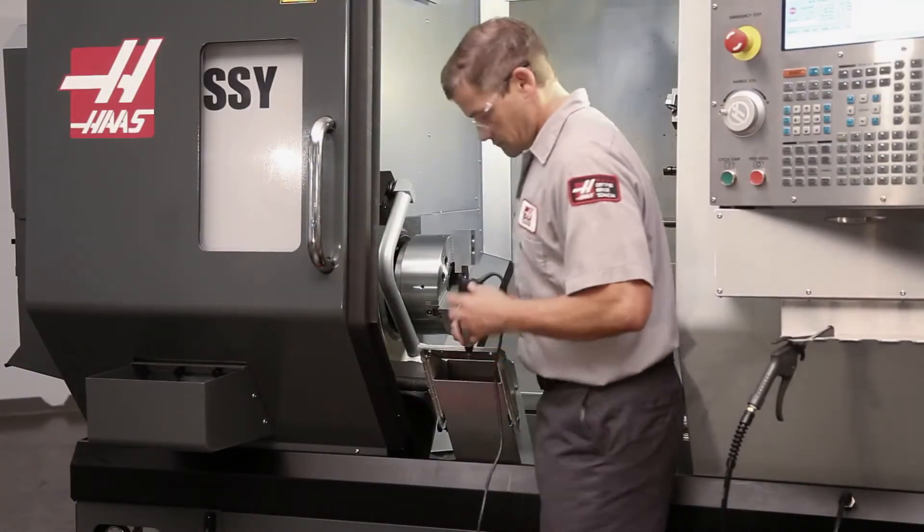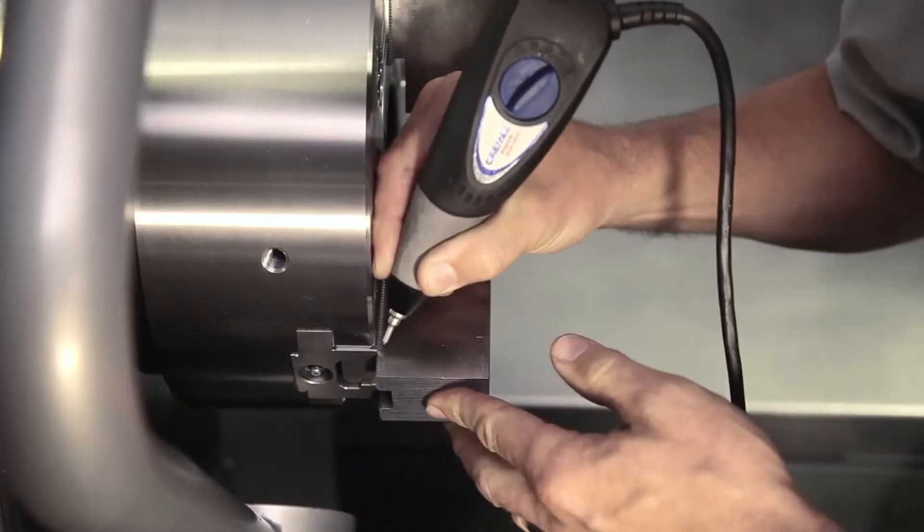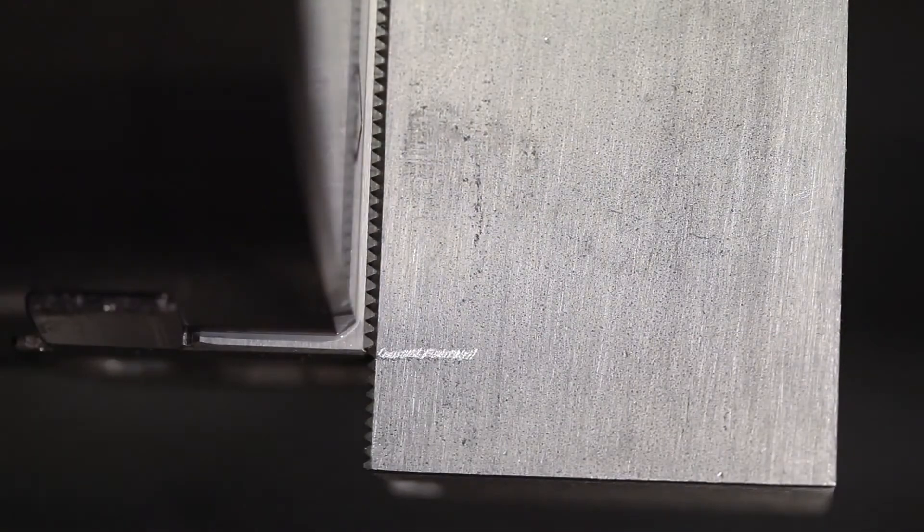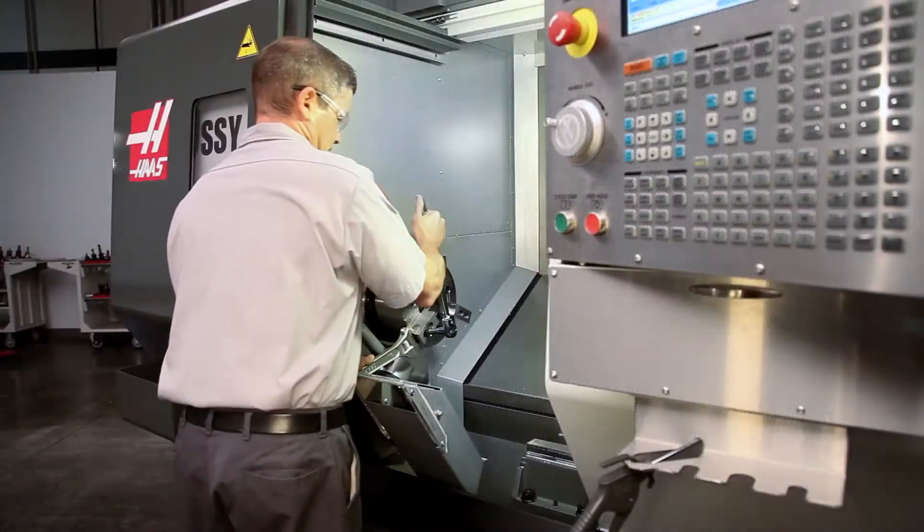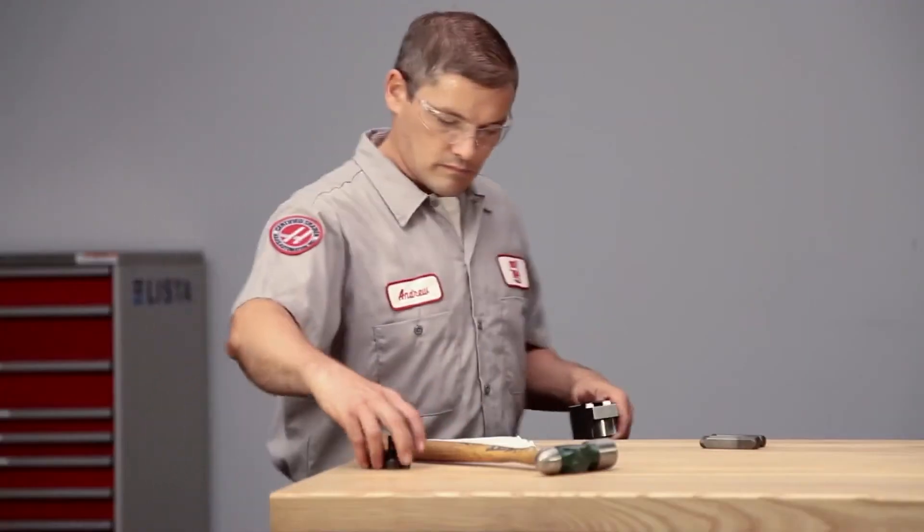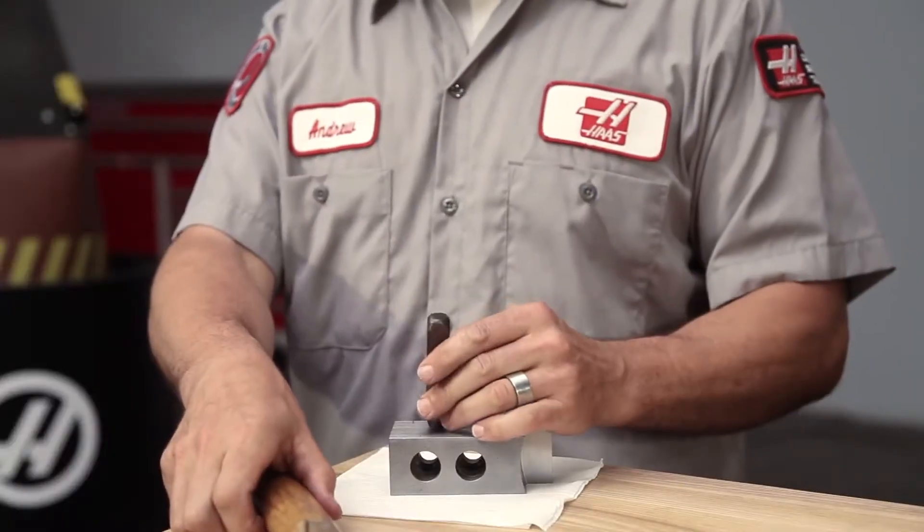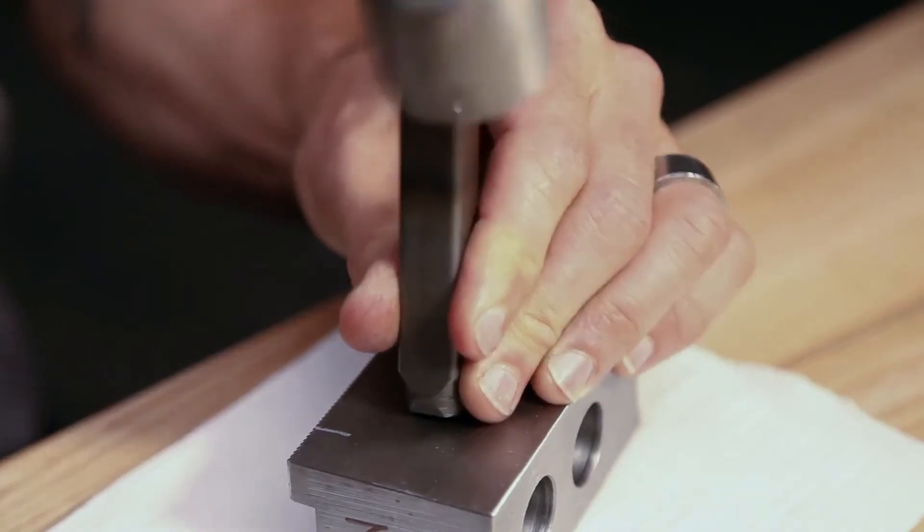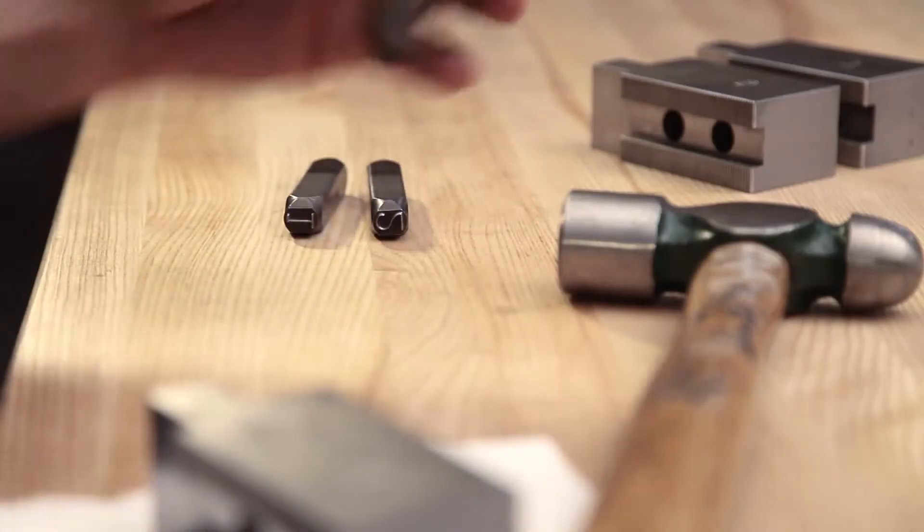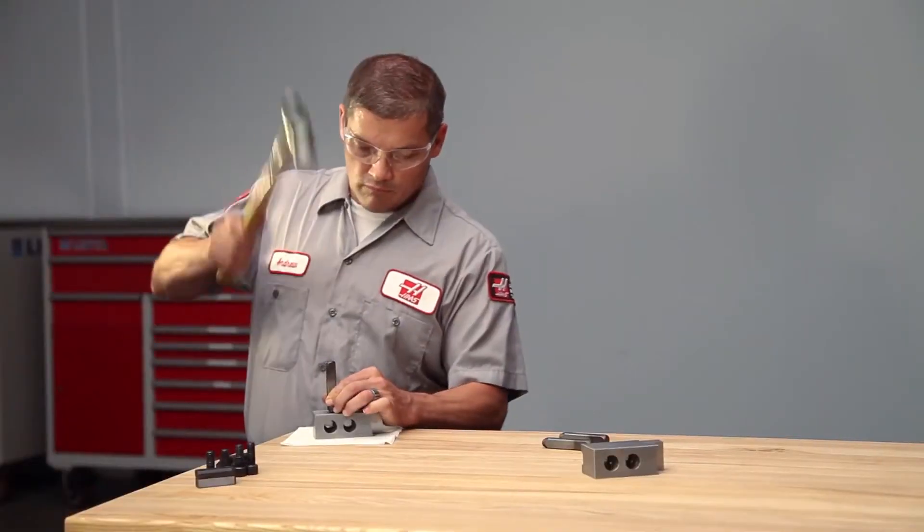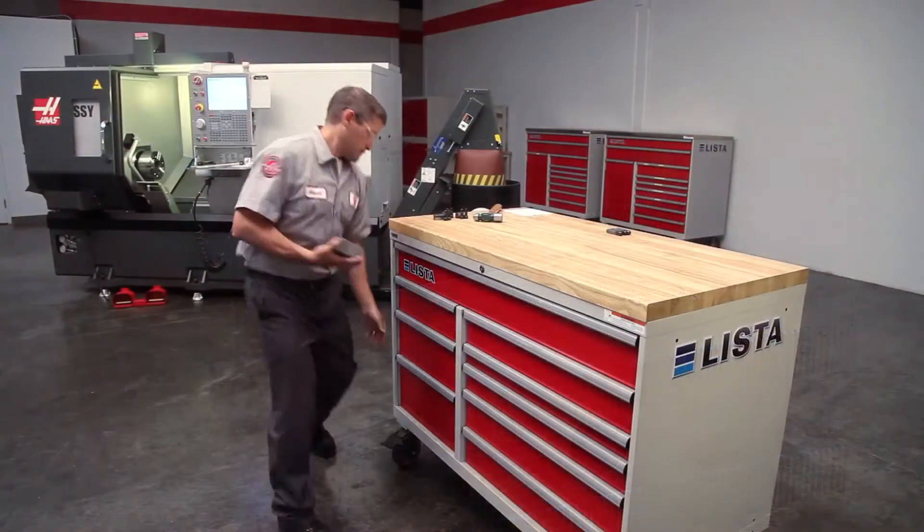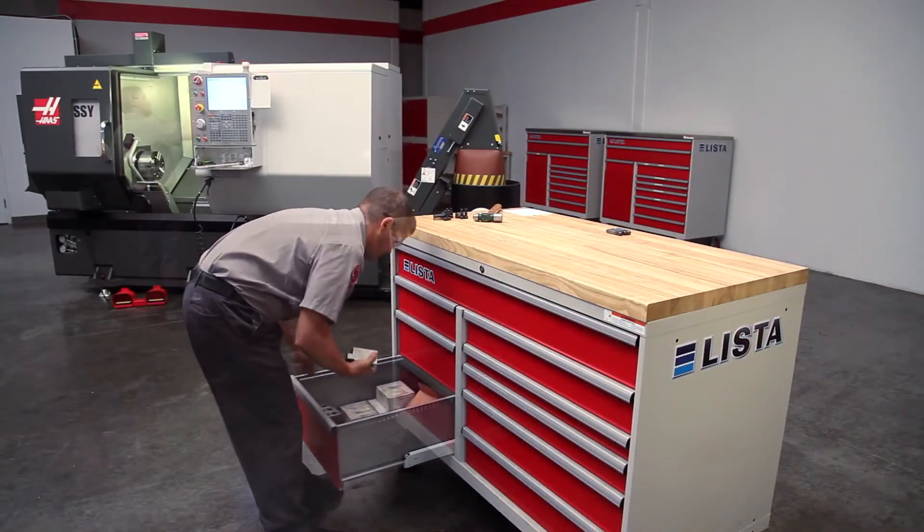Before disassembly, he finds a mark or feature on the master jaw and scribes a line on the soft jaws to locate them at this exact tooth position in the future. Then, as he removes each jaw, he numbers it to match the number of the corresponding master jaw on the chuck. In this way, concentricity will be maintained without cutting the jaws again. Andrew packs his jaws away and powers down the machine.